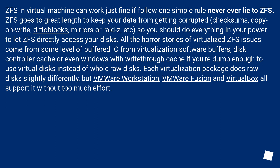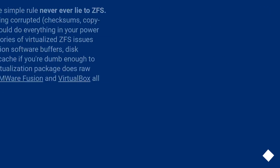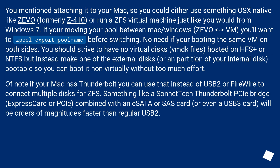Buffered IO can also come from disk controller cache, or even Windows write-through cache if you use virtual disks instead of whole raw disks. Each virtualization package handles raw disks slightly differently, but VMware Workstation, VMware Fusion, and VirtualBox all support it without too much effort. You mentioned attaching it to your Mac, so you could use something native like Zevo (formerly Z410), or run a ZFS virtual machine just like you would from Windows 7.